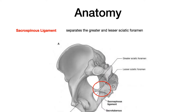Another high-yield ligament is the sacrospinous ligament, circled here in red. This ligament separates the greater and lesser sciatic foramen, and for that reason it shows up on exams.